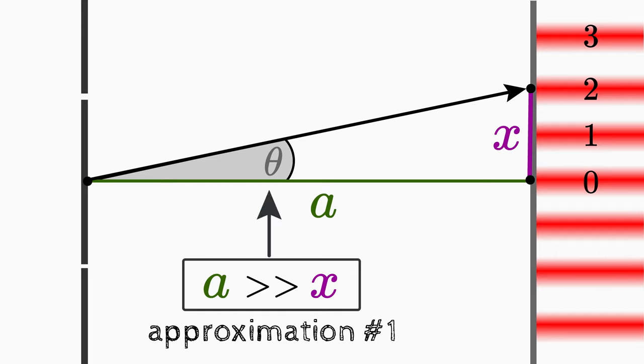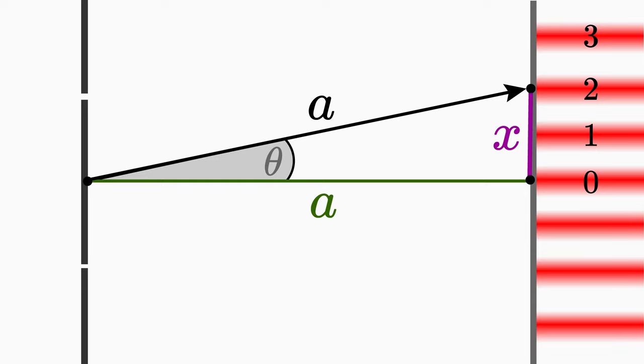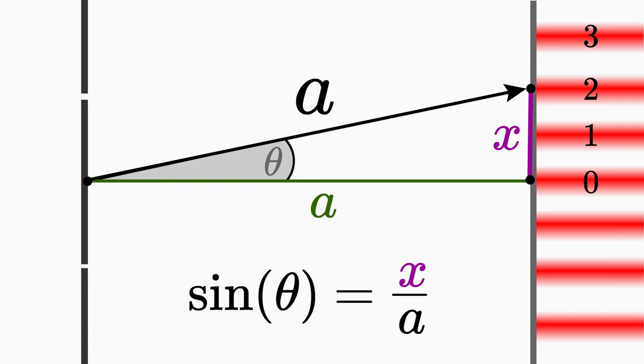Then the distance a becomes approximately as large as the hypotenuse. This results in the geometrical relation sin theta is approximately equal to x over a. Because sin theta is defined as the ratio of the opposite side to the hypotenuse.